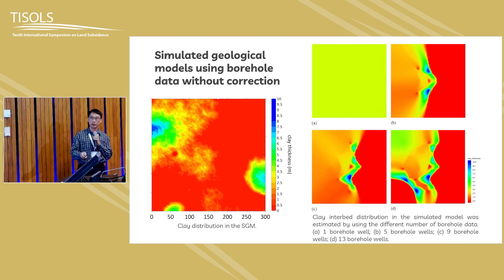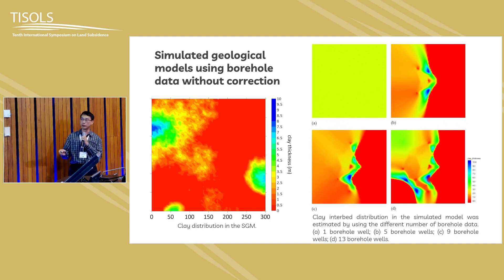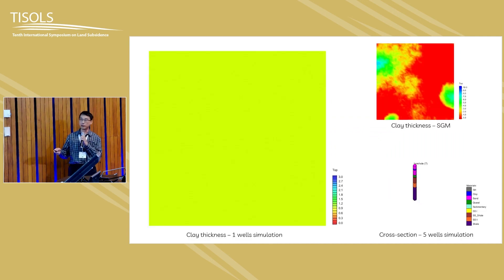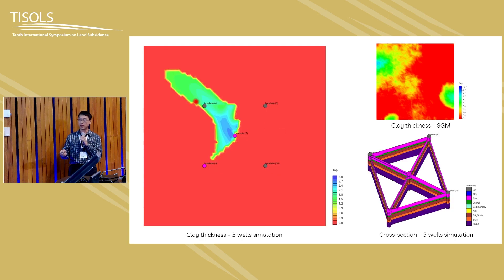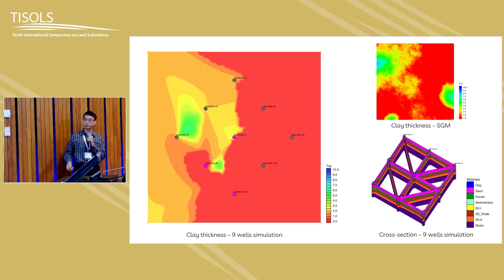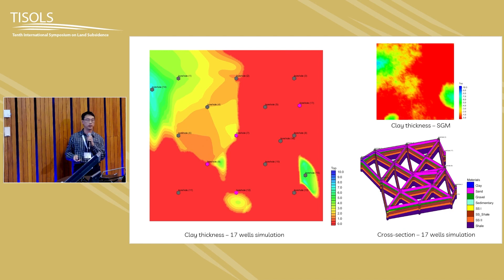Let's look at the clay thickness distributions. This is from the true solution of the synthetic geological models — the clay thickness here is larger and we have three hotspots. Using different numbers of boreholes to construct geological models, one set does not incorporate any geological knowledge, only software to construct the result. The other set uses geological knowledge for model reconstruction. When we have boreholes detecting clay, we can incorporate that into the geological models. As we increase borehole numbers, we can more precisely capture the clay thickness distributions closer to the synthetic model.